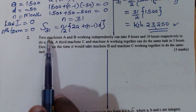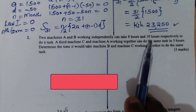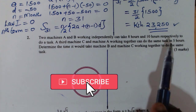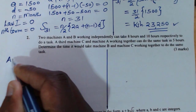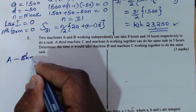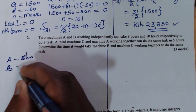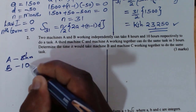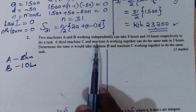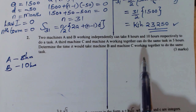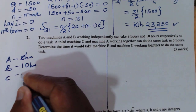We begin with the first sentence. Two machines A and B working independently can take eight hours and ten hours respectively to do a task. So machine A will take eight hours and machine B will take ten hours. There is also machine C, and we are not given the exact time machine C will take, so we let machine C take X hours.